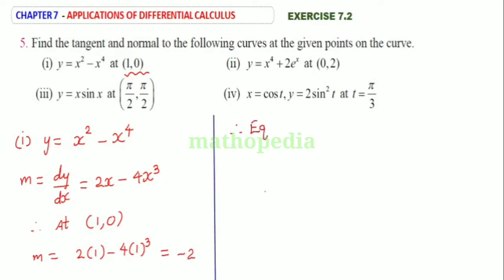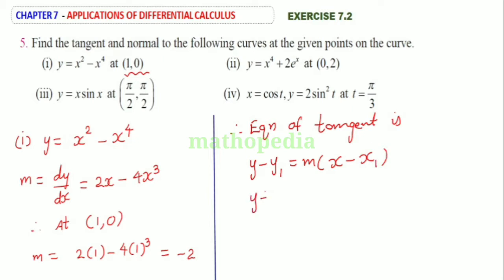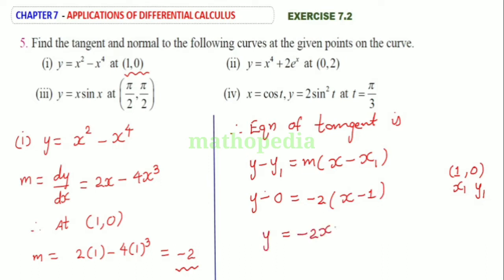Therefore, equation of tangent is y minus y1 is equal to m into x minus x1. The point is (1, 0), so x1=1, y1=0. So y minus 0 is equal to minus 2 into x minus 1. That is y equals minus 2x plus 2. Rearranging, therefore 2x plus y minus 2 equal to 0. This is the equation of tangent.